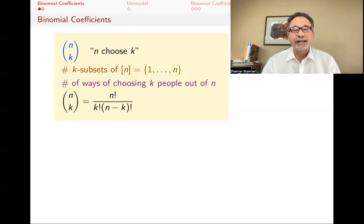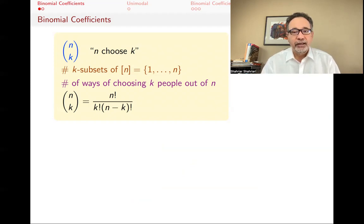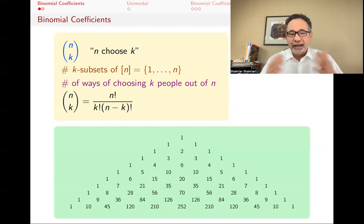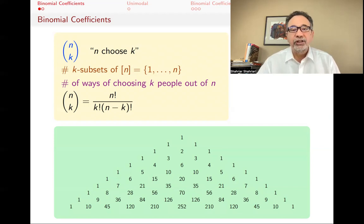Why they're called binomial coefficients will become clear in one of the later lectures when we talk about the binomial theorem. You should watch the previous videos on binomial coefficients if you haven't done so. When we look at these binomial coefficients, we usually put them in a triangle — usually called Pascal's triangle, but I like to call it the Khayyam-Pascal triangle. These are just the numbers n choose k.